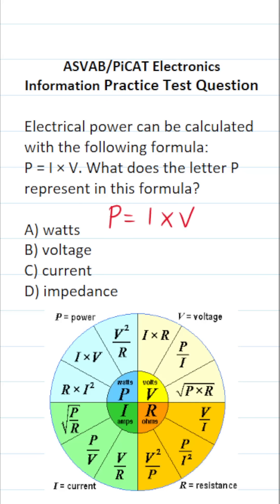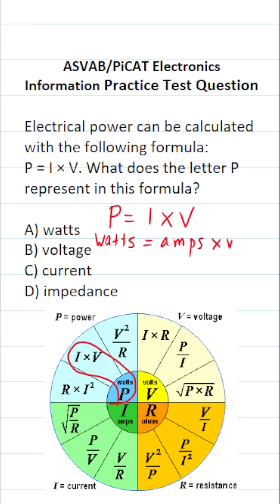If you take a look at this electrical engineering wheel down here, you can see the formula is right here. P, of course, stands for watts. I stands for amps, and V stands for volts. So in other words, P represents watts.